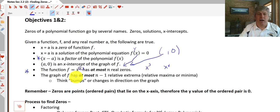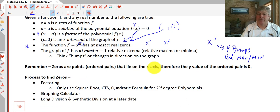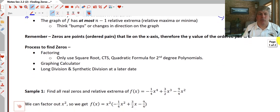And the graph of f has at most n minus one relative extrema, so relative max or min. So these are the bumps on a graph. If you have something that's like x to the fifth, that means you could have as many as four bumps or relative max and min. Just remember the zeros are ordered pairs that lie on the x-axis. Therefore, the y value of the ordered pair is zero, so frequently I'll ask for the zeros or the x-intercepts to be written as an ordered pair.